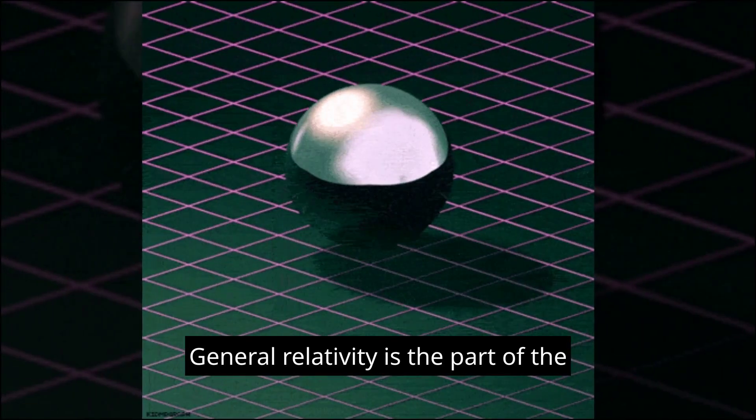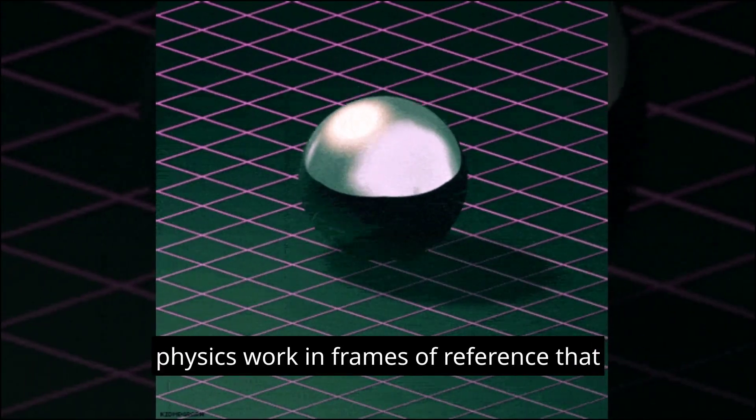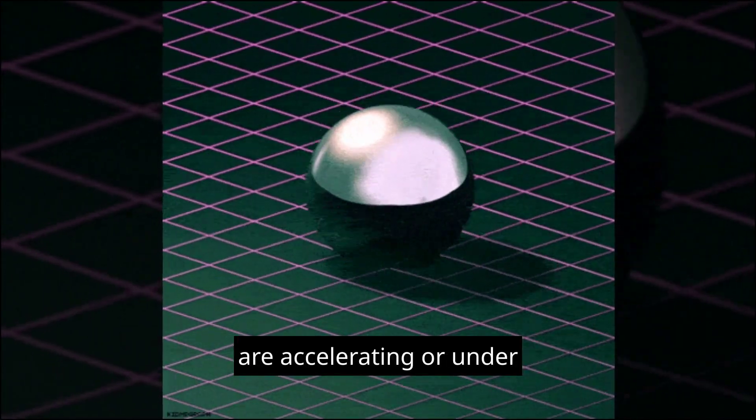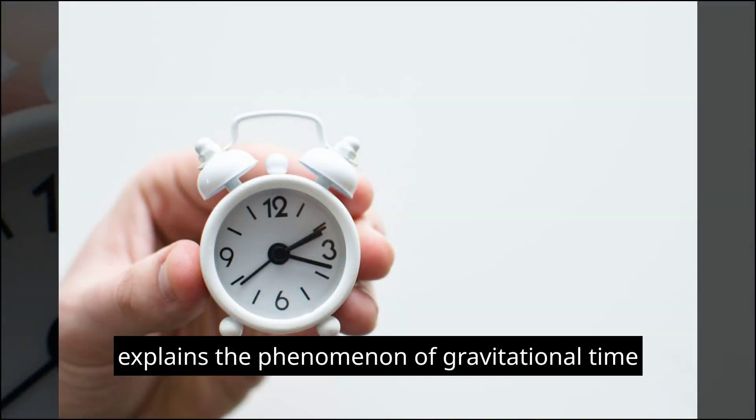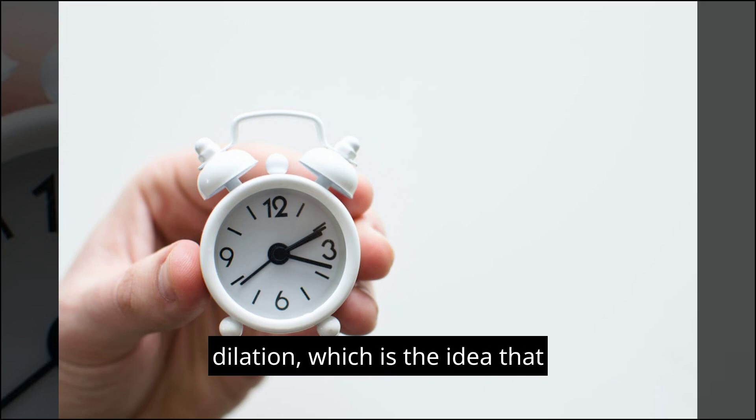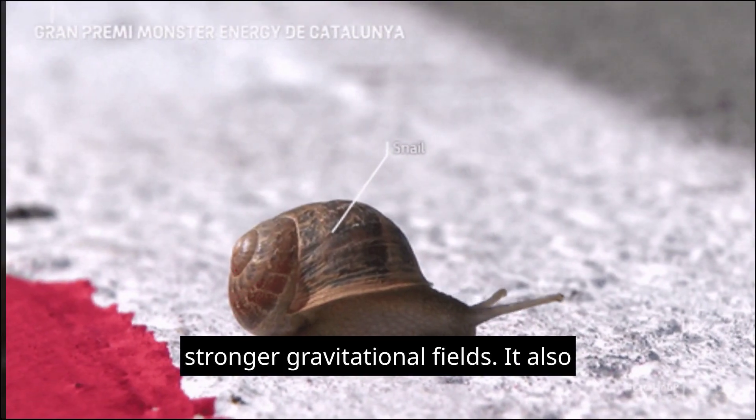General relativity is the part of the theory that deals with how the laws of physics work in frames of reference that are accelerating or under the influence of gravity. This theory explains the phenomenon of gravitational time dilation, which is the idea that time appears to pass more slowly in stronger gravitational fields.